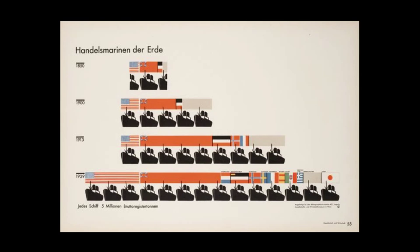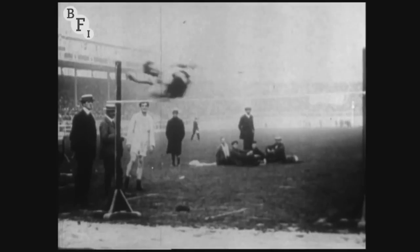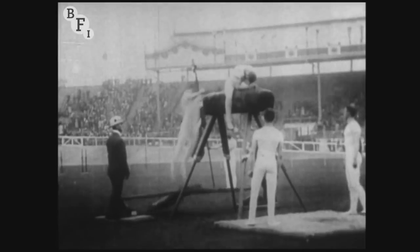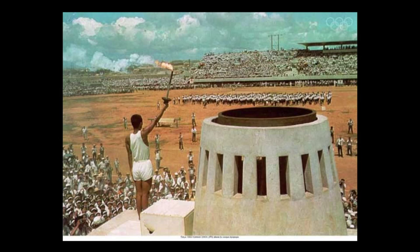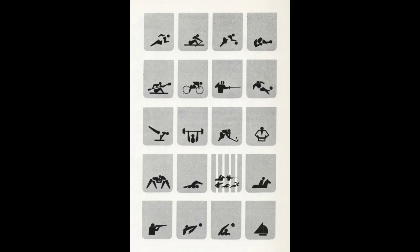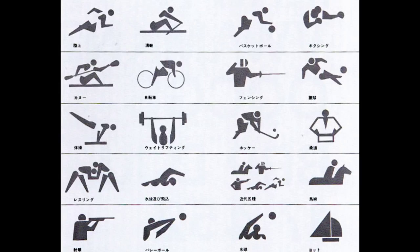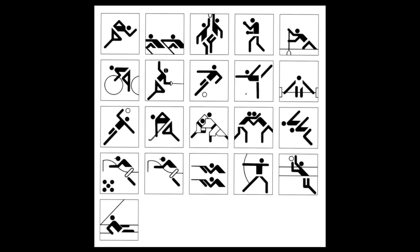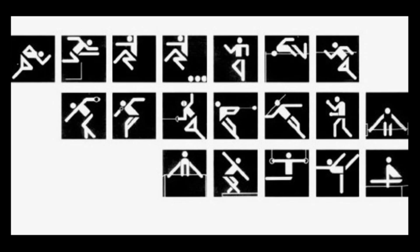Despite the success of the Vienna Method, it took nearly 40 years for isotypes to see their first use on the international stage, the Olympic Games. For years, the Olympics had dealt with the same challenge — how to direct people of diverse languages and backgrounds to the various sporting events. But in 1964, the Tokyo Olympics enlisted the help of designer Masasa Katsumi, who created 59 monochromatic isotypes, each depicting a specific event. The system worked, and in 1972, German graphic artist Otto Eicher was hired to refine these Olympic isotypes.